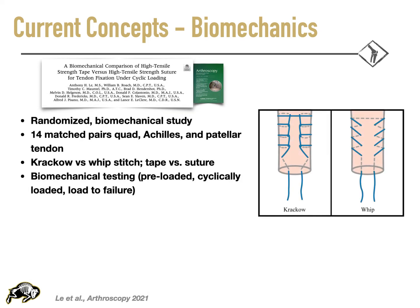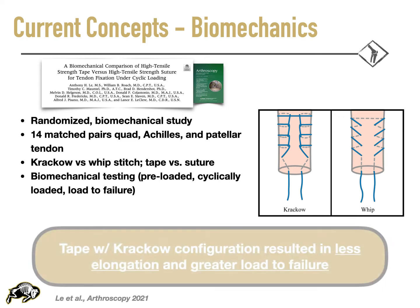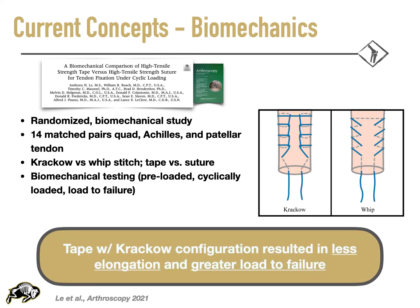Furthermore, evaluating repair characteristics, a recent biomechanical study by Lane and colleagues compared tendon repair in 14 matched specimens. They compared Krakow versus whip stitching and also compared high tensile strength tape versus strength suture. Results showed less total normalized elongation and greater maximal loads to failure when suture tape was utilized, specifically with a combination of a Krakow stitch configuration.